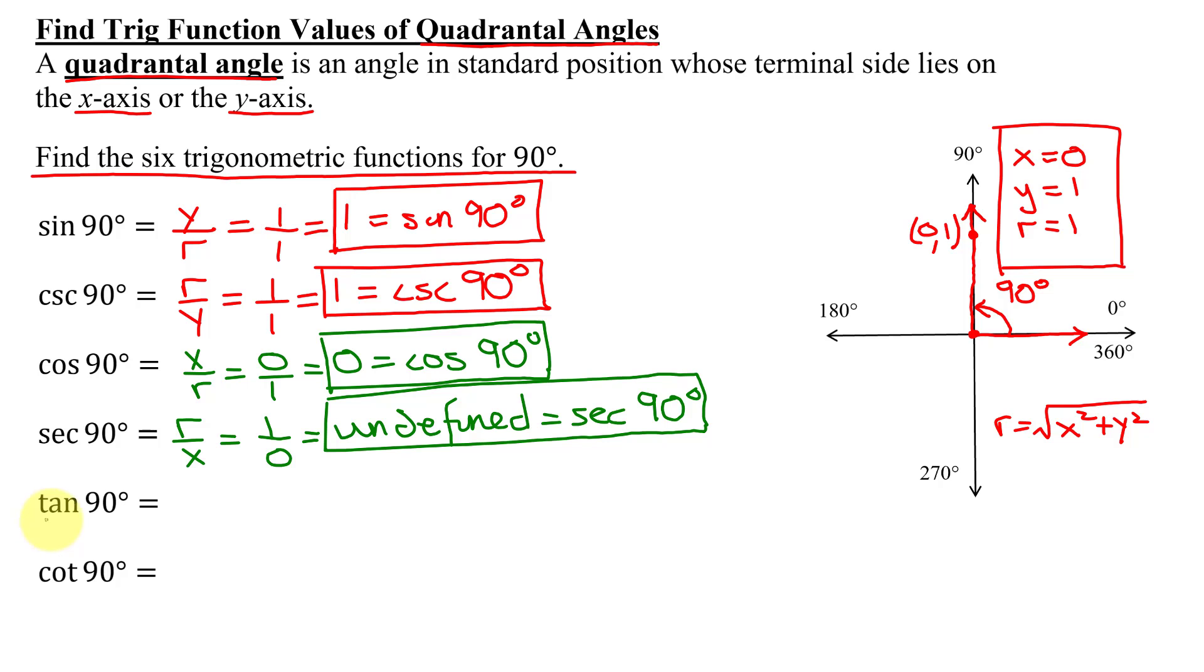Next, the tangent of 90 degrees, that's going to be y over x. y was 1, x was 0, 1 divided by 0 is undefined. So the tangent of 90 degrees is also undefined.